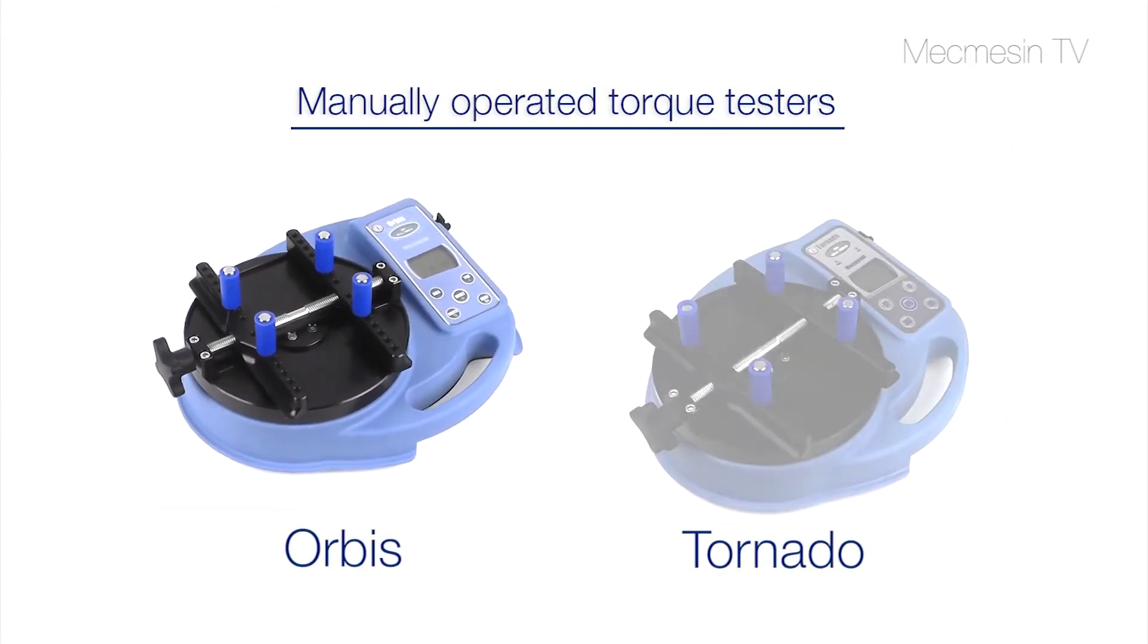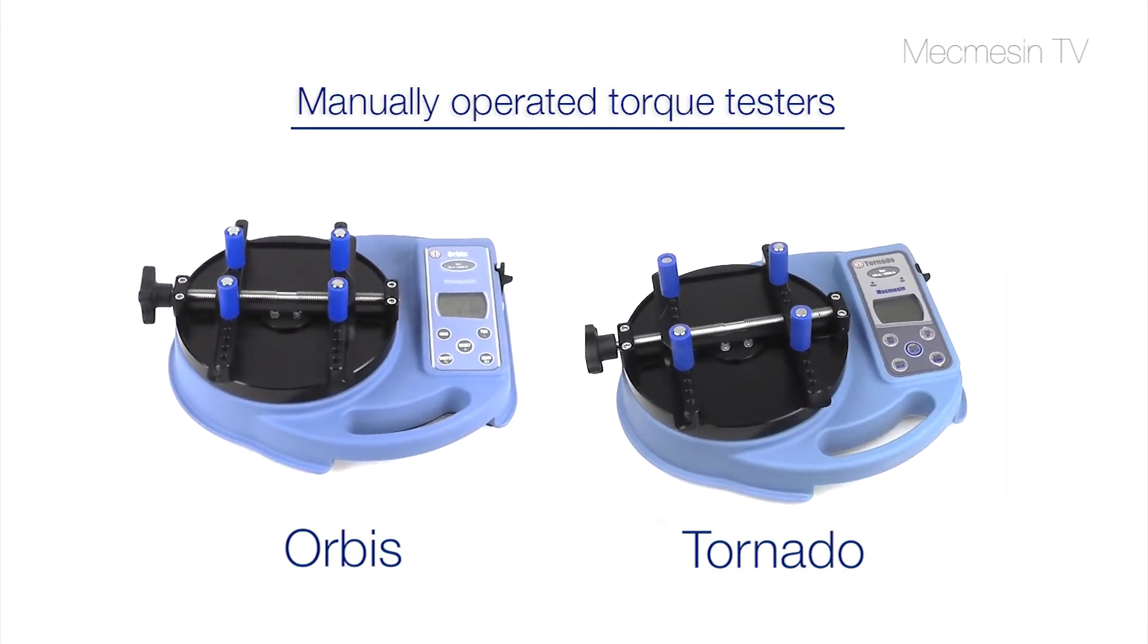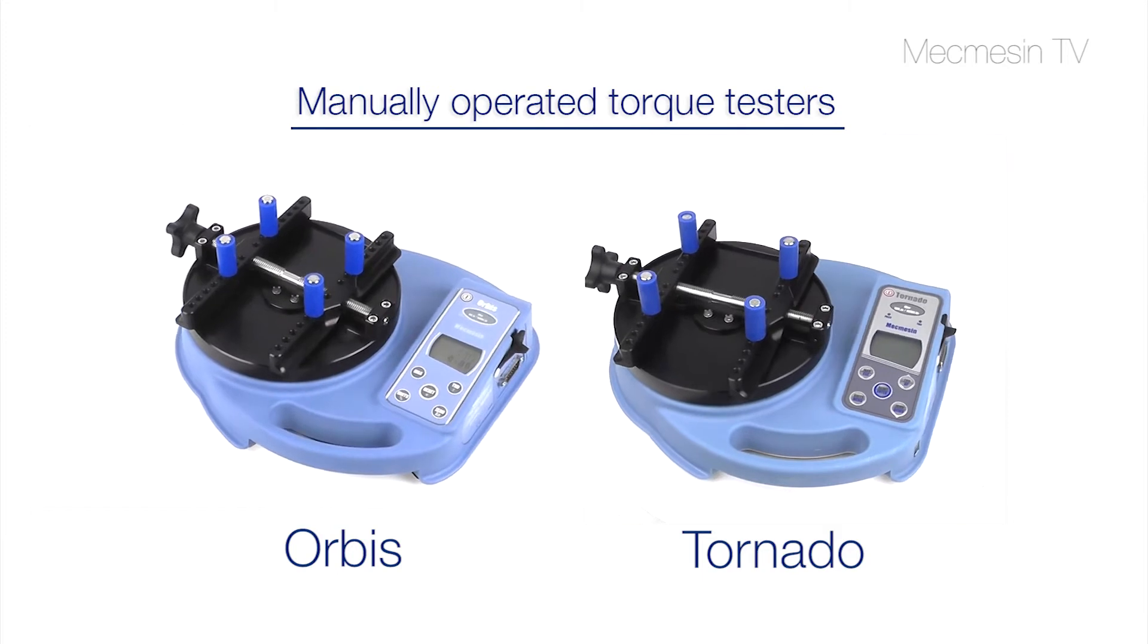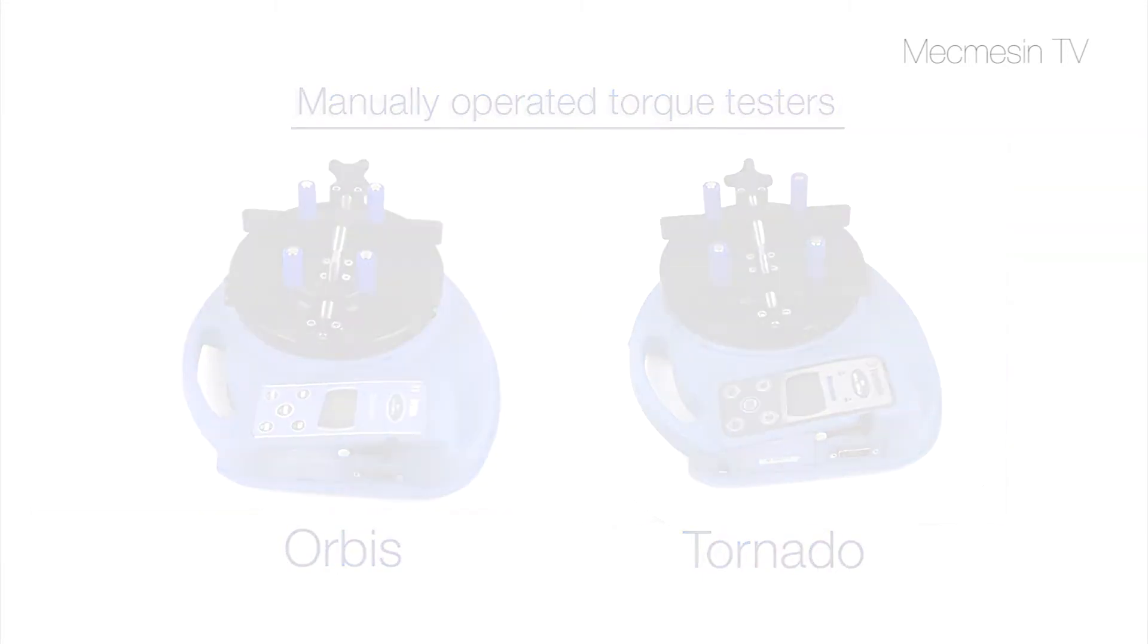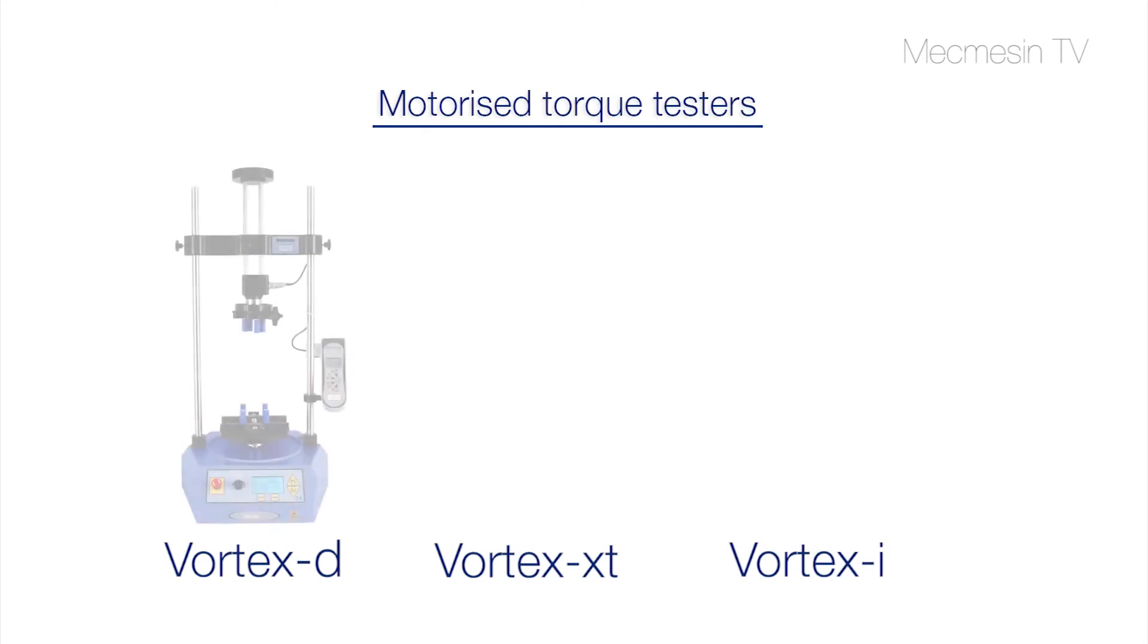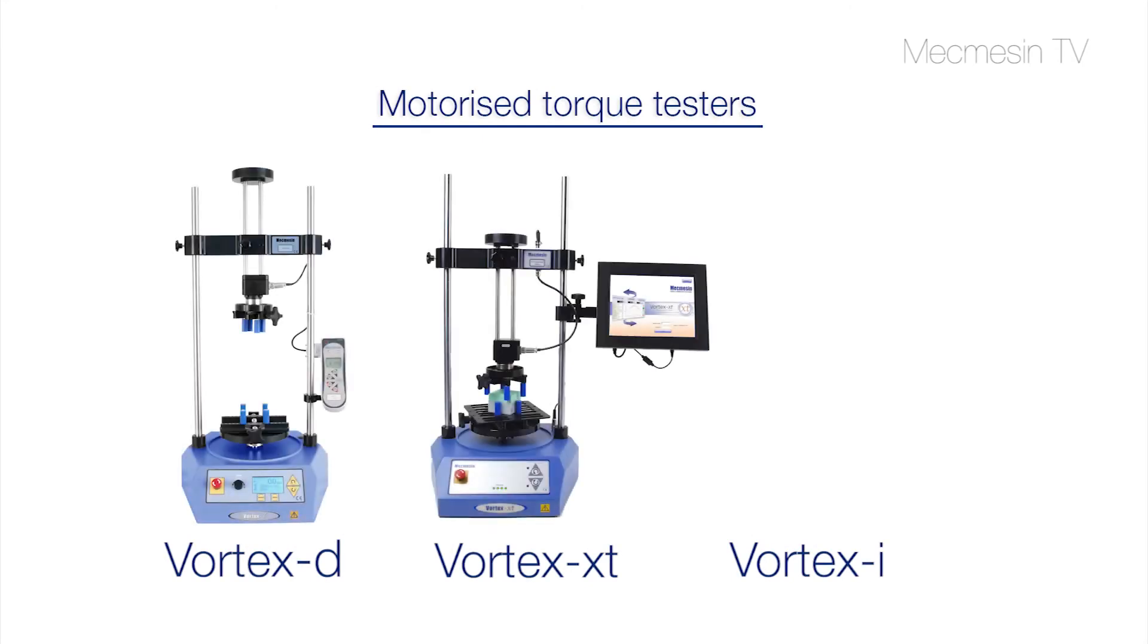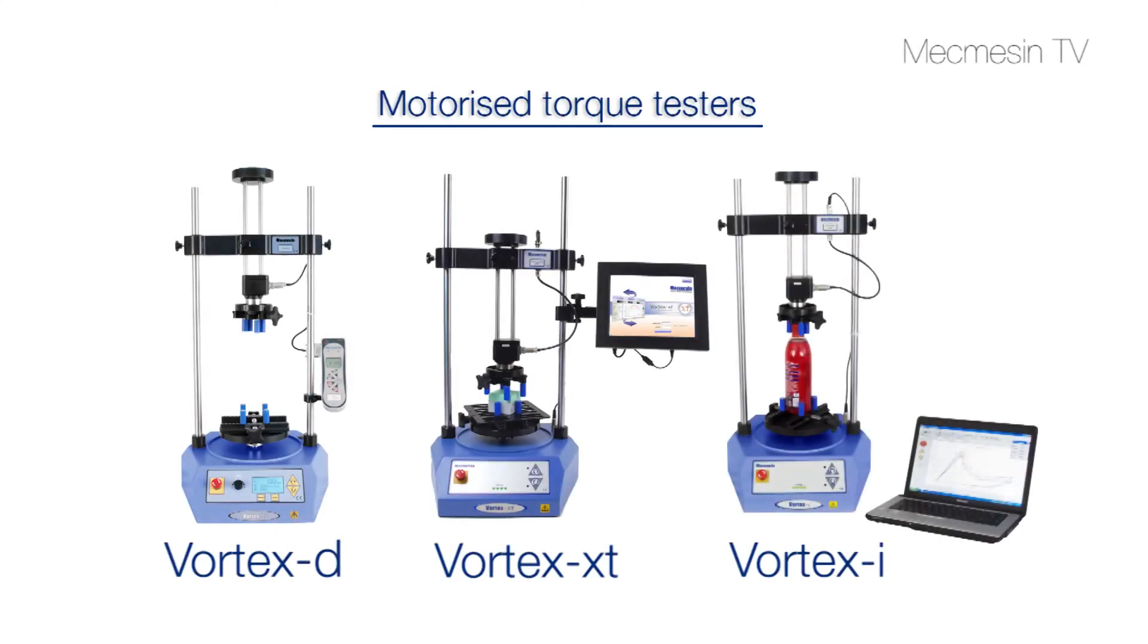The Orbis and the more feature-rich Tornado are Mecmesin's manually operated digital torque testers for simple and cost-effective measurement of low-capacity torque. For more technically demanding applications requiring greater accuracy and repeatability, choose the Vortex range of motorized and PC-controlled torque testing systems.